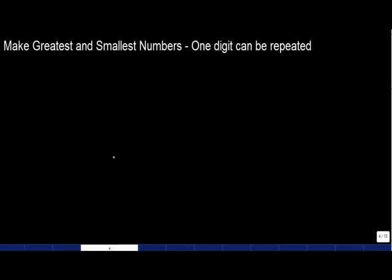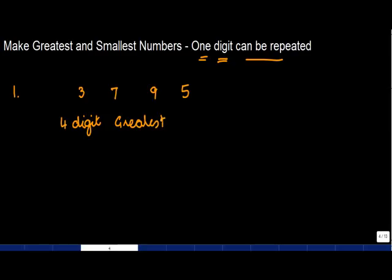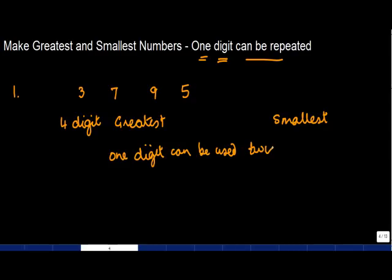We are making the greatest and the smallest number where one digit can be repeated. In our previous video, we discussed a situation where none of the digits could be repeated. In this case, I give you four digits — three, seven, nine, and five — and you have to make a four-digit greatest and smallest number using these digits, with the condition that one digit can be used twice.